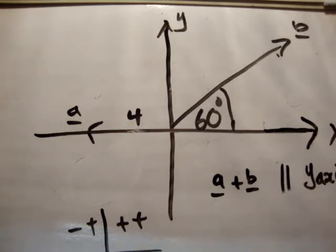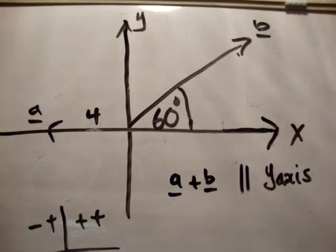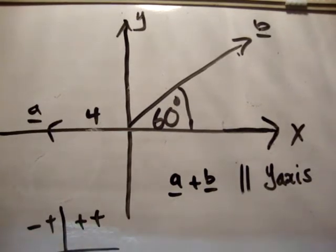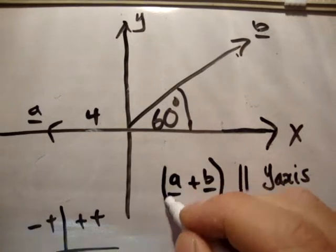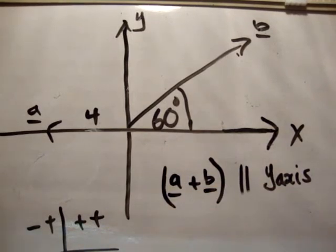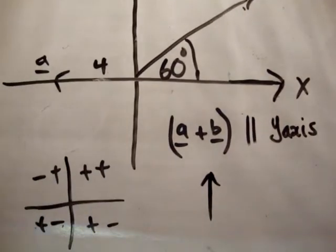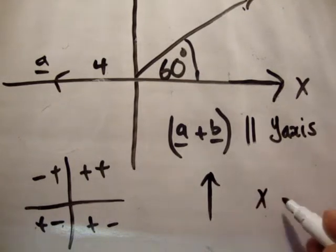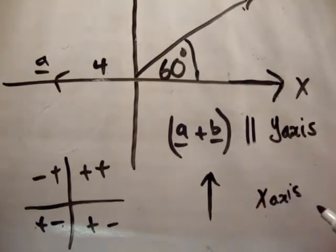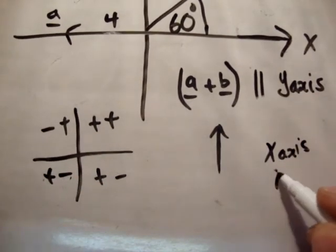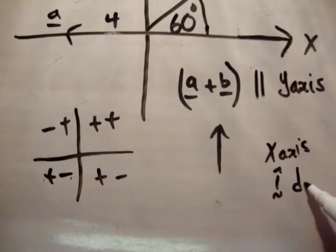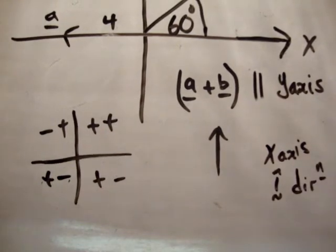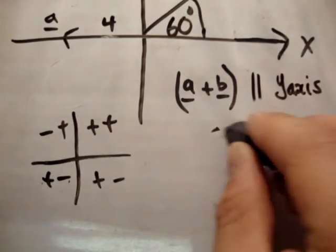Now, what we're given in the problem is that the vector a plus b is parallel to the y-axis. Now, what does that mean? This vector here is parallel to the y-axis. It means it's got no component in the x-axis or in the i-hat direction. That's what that means. So all the stuff in the x-axis sum to 0.